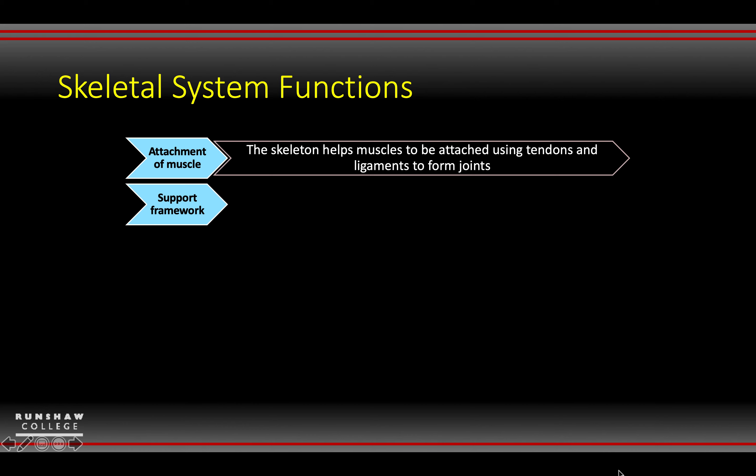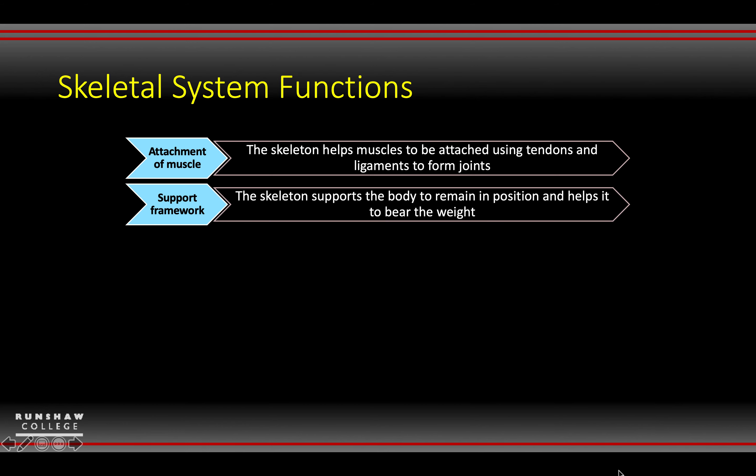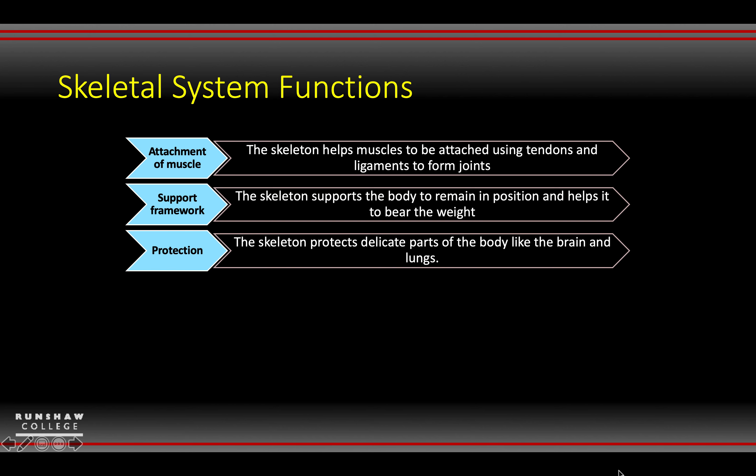The skeleton is also a support network, so this helps us to keep our posture and bears the weight of the rest of the body as well. It also protects vital organs like the brain, the lungs, and the heart — specifically via the ribcage and the cranium.